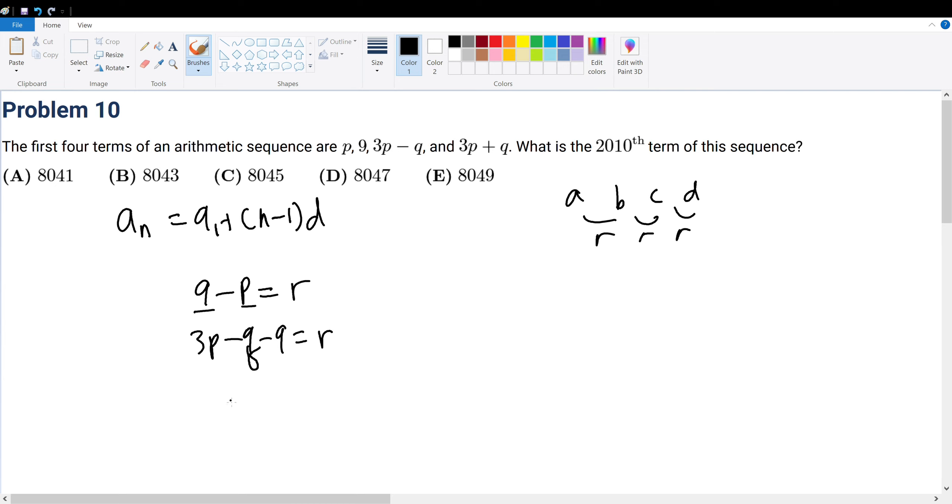We can get that from simply saying that 3p plus q minus 3p minus q is equal to r as well. So from here, 2q is equal to r. Now we can solve the question.